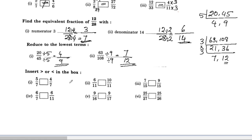Insert greater than or less than in the box. When the denominator is the same, the fraction with the greater numerator is the greater fraction. So 5 by 7 is greater than the other. Next, with the same denominator, 10 by 11 is the greater fraction. Then 7 by 15 is greater. For fractions with different denominators, the fraction with the smaller denominator is greater — so 26 by 25 compared, 6 by 7 is greater as the denominator is smaller.